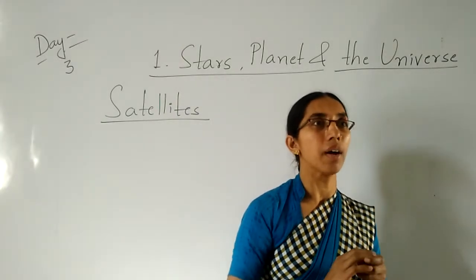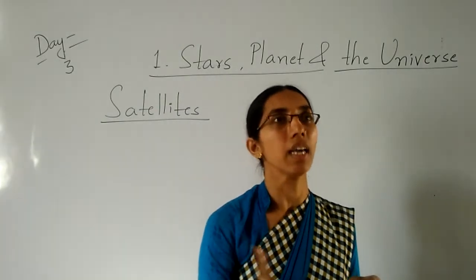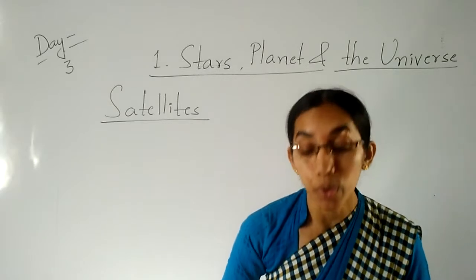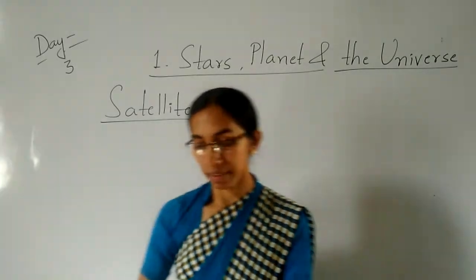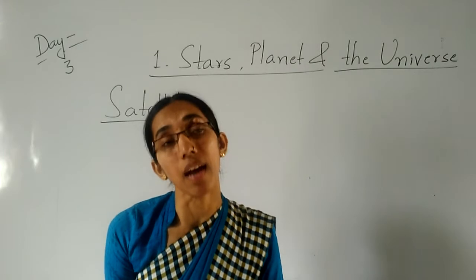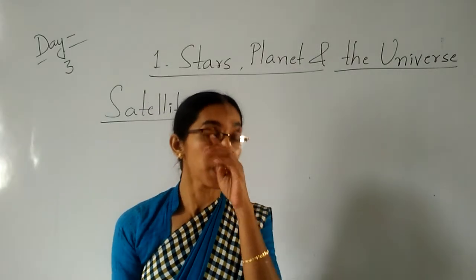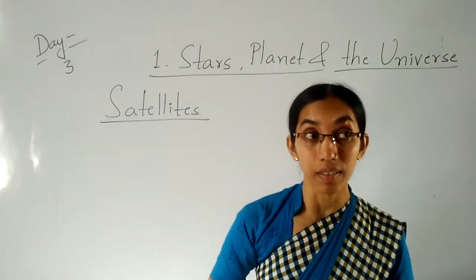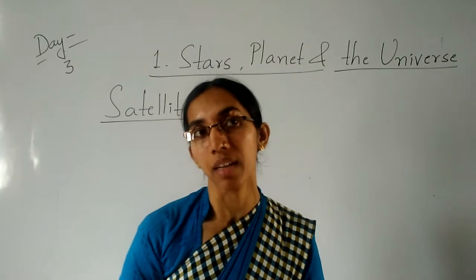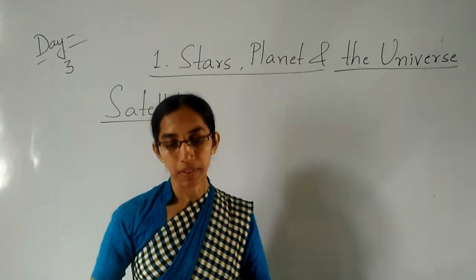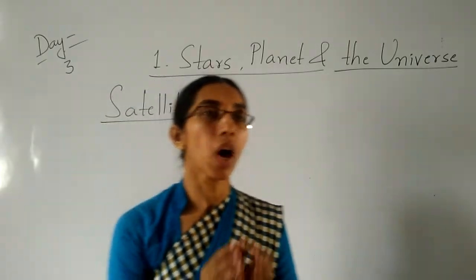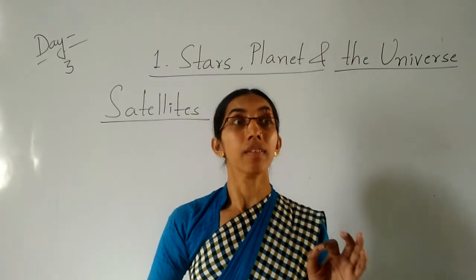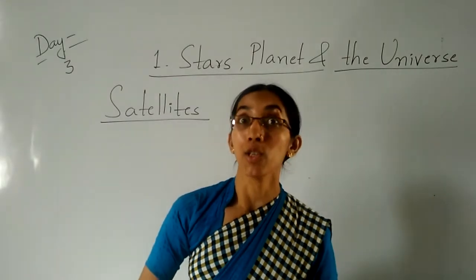Which planet has the beautiful rings — nine beautiful rings? Saturn. Saturn has nine beautiful rings. Which is the largest planet in the solar system? Jupiter is the largest planet in the solar system. Venus is also considered the largest planet in the solar system.